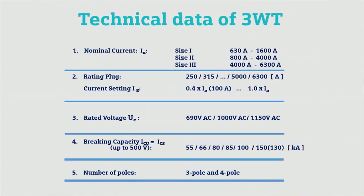These are the technical data for the Siemens 3WL ACB. The nominal current capacity ranges from 630 amperes to 6300 amperes in different sizes. The rating plug is from 250 amperes to 6300 amperes. Rated voltage, breaking capacity, and number of poles are given as per different sizes and makes.